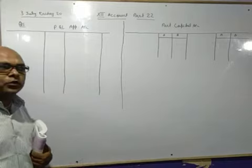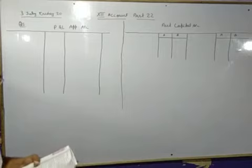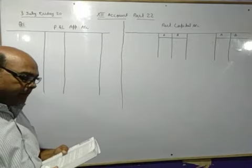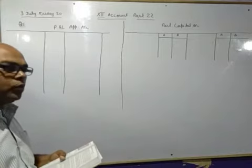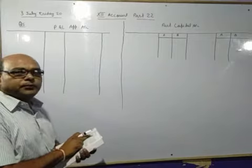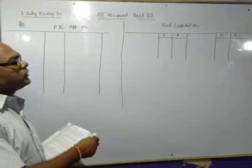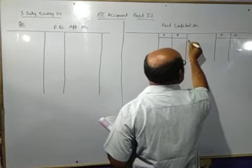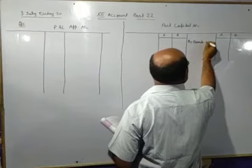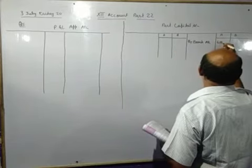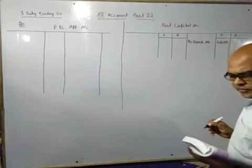Please all of you open the book. On 1st April 2018, A and B commenced business with capital of 6 lakhs and 2 lakhs respectively. Business started. You will pass the entry bank account debit to capital account. You will record in partner's capital account credit side by bank account. A capital is 6 lakhs and B capital is 2 lakhs.